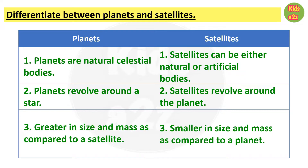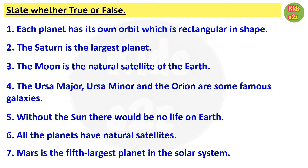Third point: planets are greater in size and mass as compared to a satellite; satellites are smaller in size and mass as compared to a planet. Here kids need to identify whether the statement is true or false. First one: each planet has its own orbit which is rectangular in shape.